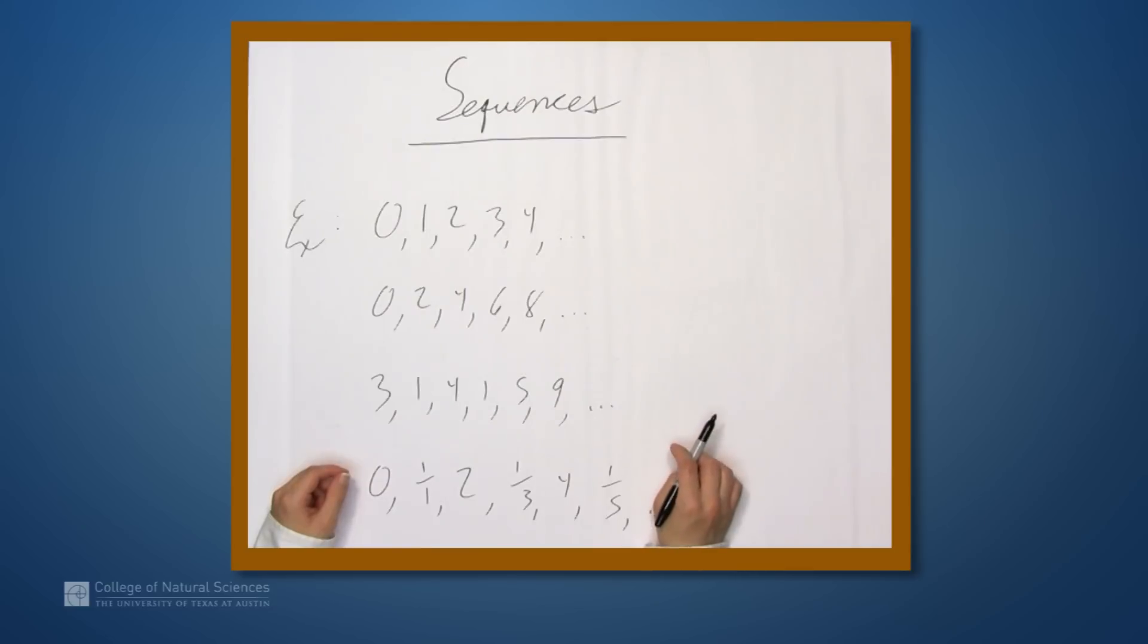Now for us, what we care about most is the behavior of sequences as they tend toward infinity. So what's going on with these three dots? And for the sake of being explicit, in most cases we're going to be dealing with sequences that are given by formulas. So in practice, we're not going to see a lot of stuff like this, where sequences are formed by the digits of something like pi. So let's look at some examples.